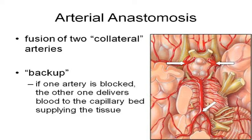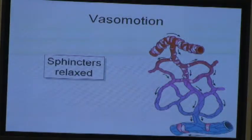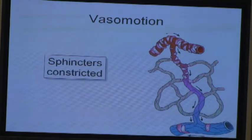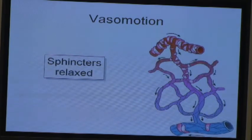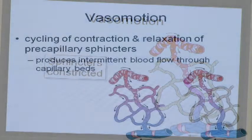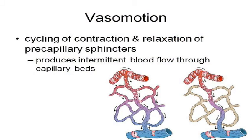We've seen an example of arterial anastomosis where the right and left coronary arteries come around the back side of the heart and merge. There is also vasomotion — the intermittent flow of blood through those capillary beds — meaning that at any one moment, some of your capillary beds are not going to have blood flowing through them.